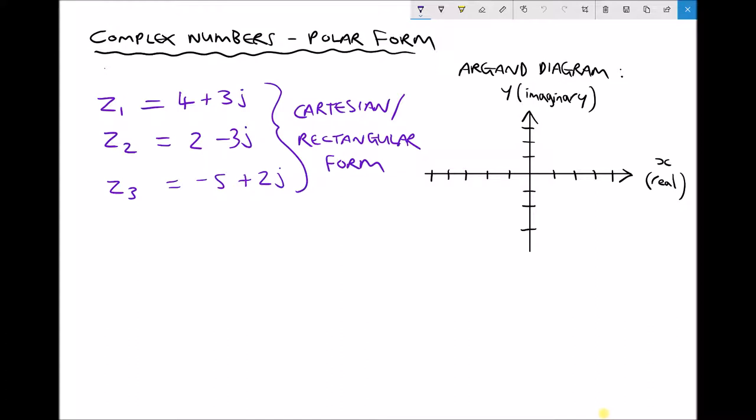If we were to plot Z1 on the argand diagram we have a real component of 4, an imaginary component of 3j, and that would be represented by a point on our argand diagram. So our complex number Z1 can be represented like so.